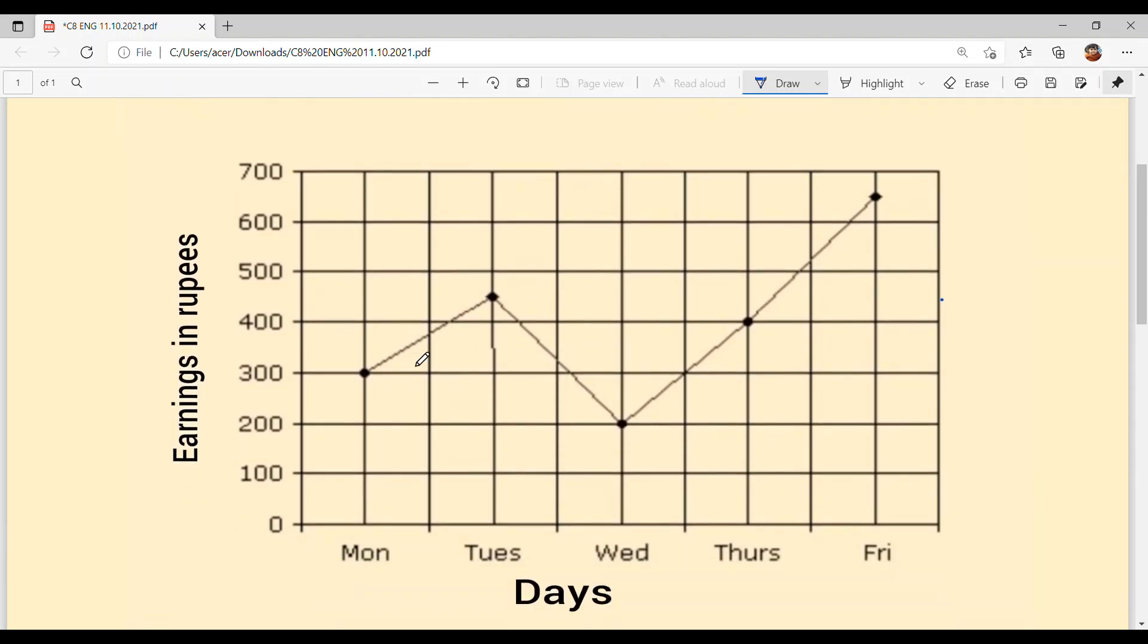Now you see, it is very easy. There are earnings in rupees, which means 100 rupees, 200 rupees, 300 rupees, 400 rupees, 500 rupees, 600 rupees, and 700 rupees. The x-axis shows days, weekdays: Monday, Tuesday, Wednesday, Thursday, Friday, Saturday, Sunday - weekend.